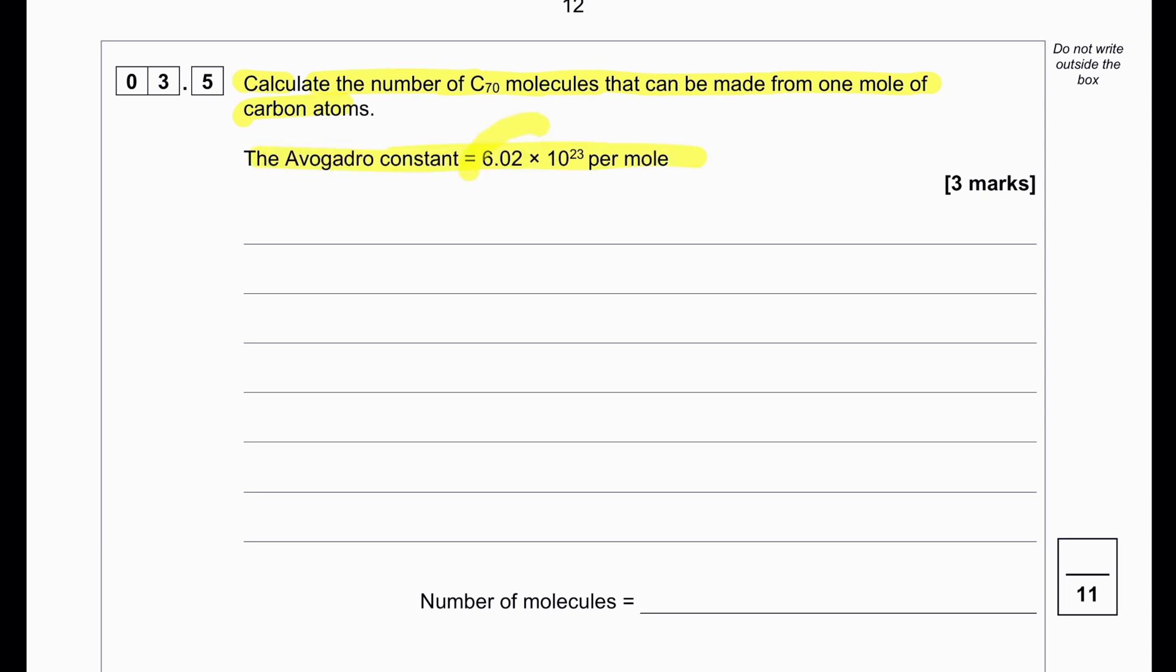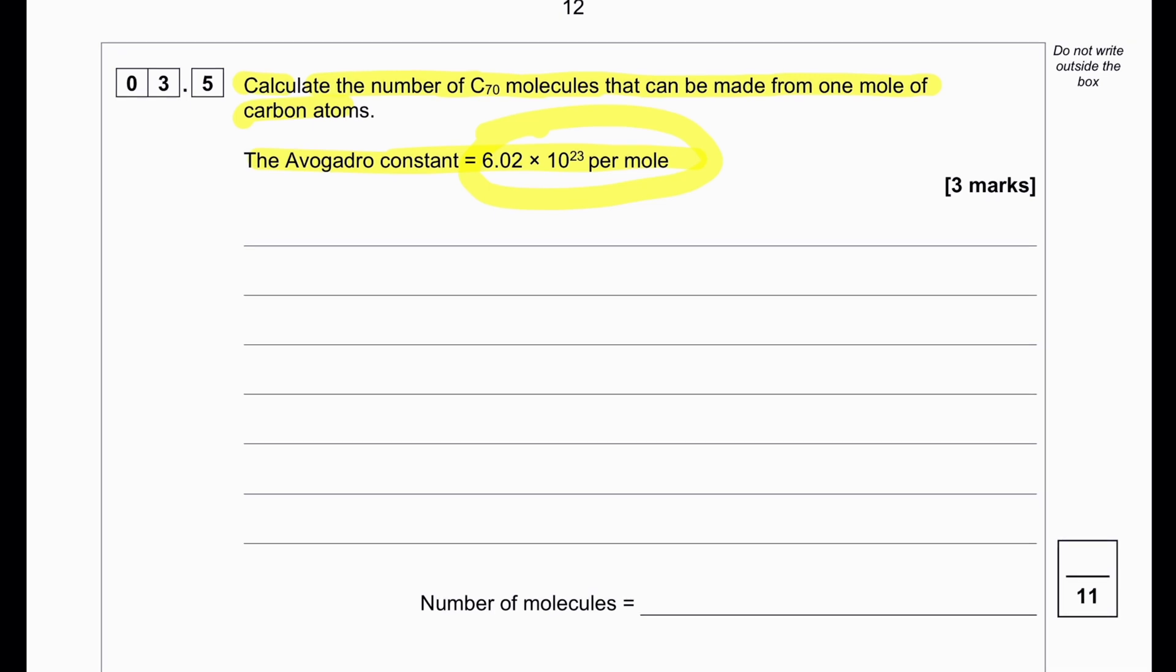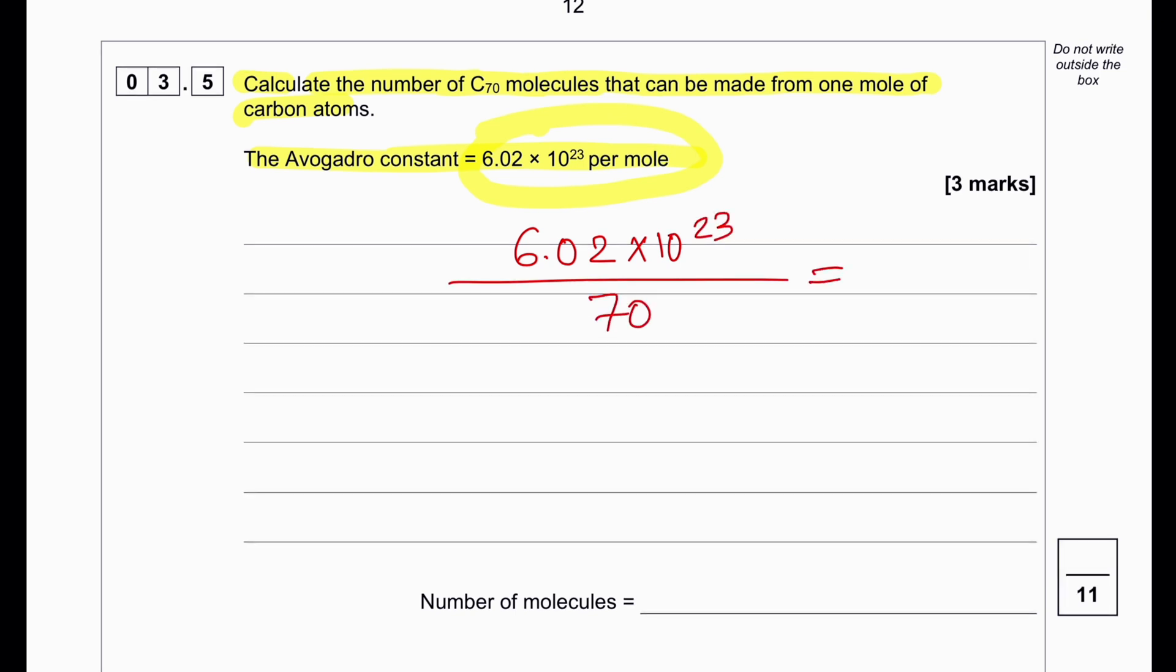Calculate the number of C-70 molecules that can be made from one mole of carbon atoms. Avogadro constant shows us the number of atoms within one mole of carbon atoms. To make C-70 molecule, we require 70 atoms of carbon. We can divide 6.02 × 10^23 carbon atoms by 70. This gives us 8.6 × 10^21.